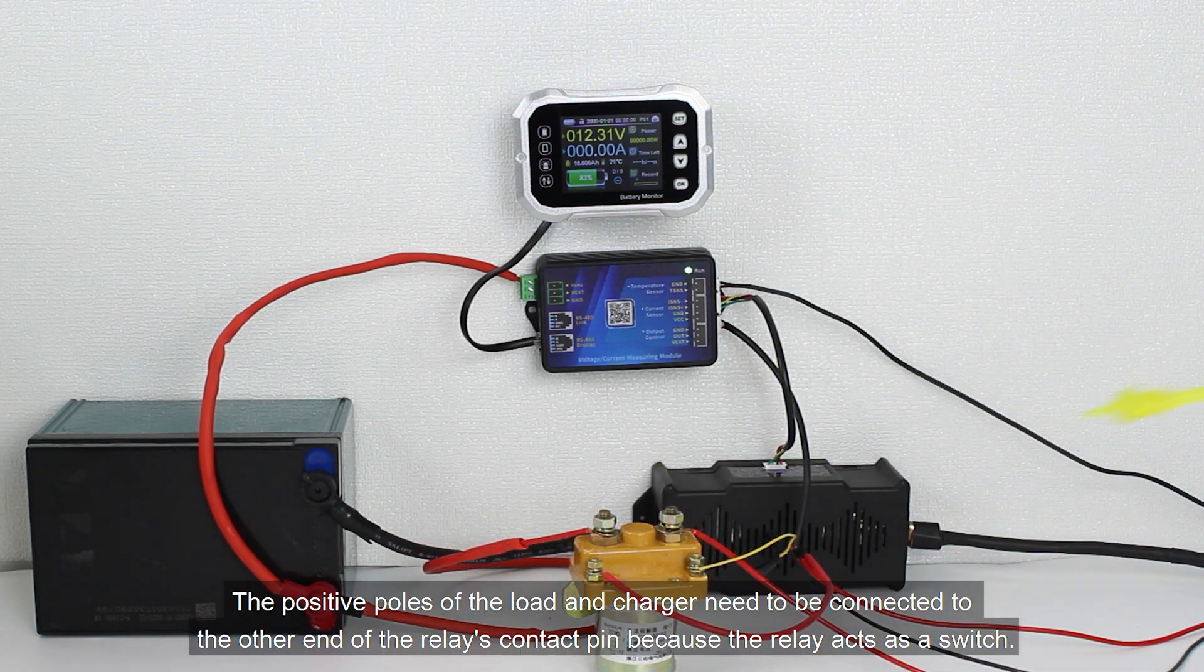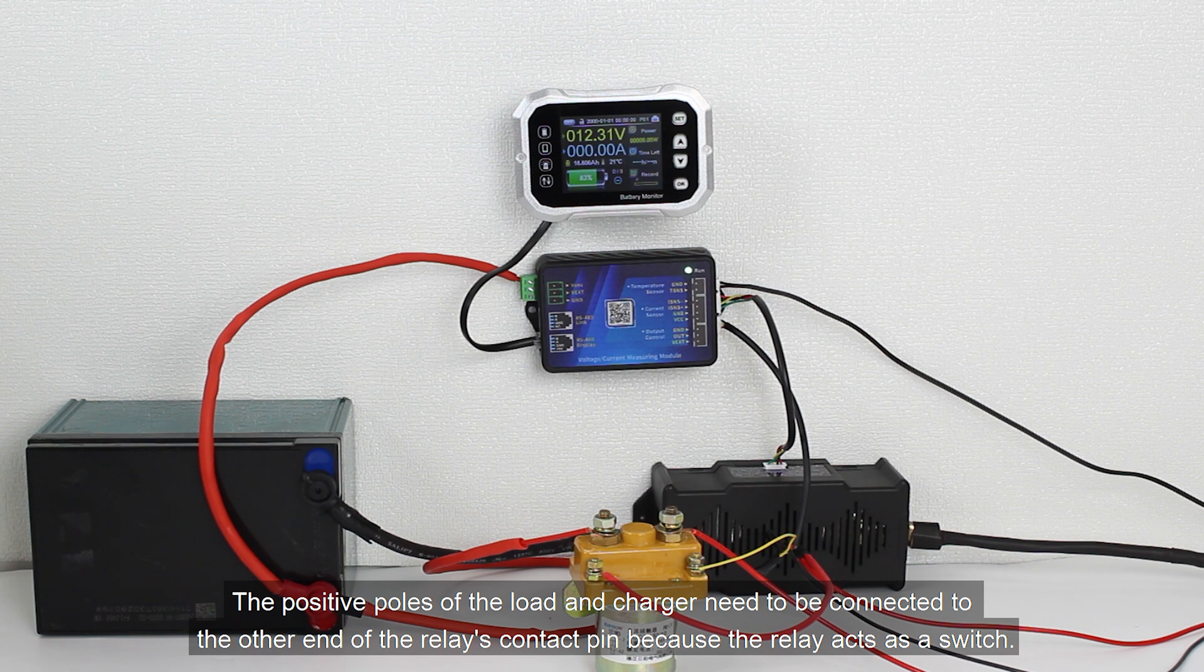The positive poles of the load and charger need to be connected to the other end of the relay's contact pin because the relay acts as a switch.